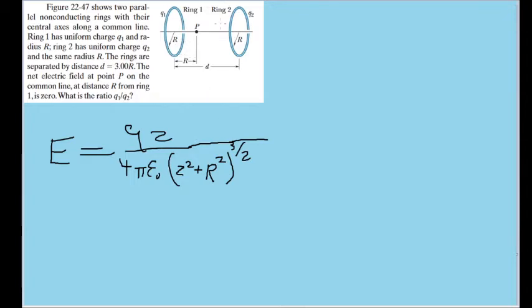But in this situation, however, note that r refers to the radius of the ring and z is the distance between the point and the center of the ring. So in this case, if we just focus on the electric field due to the left ring, then z and r are actually the same.